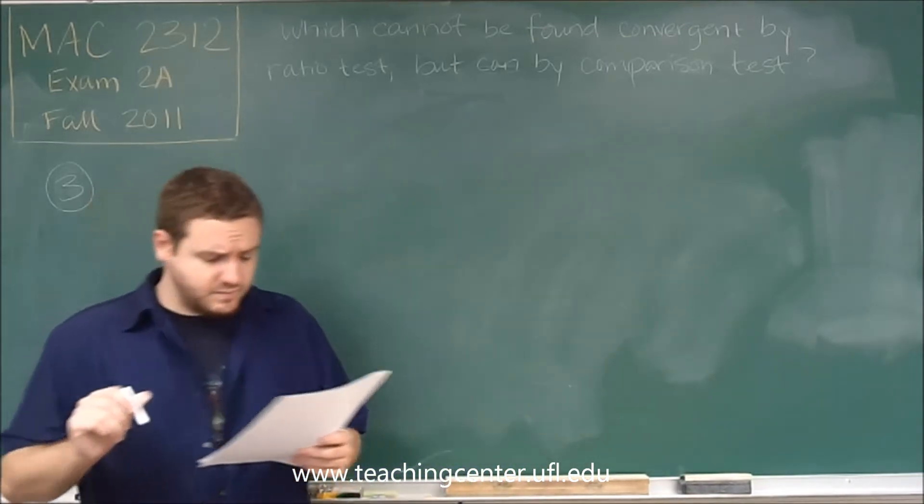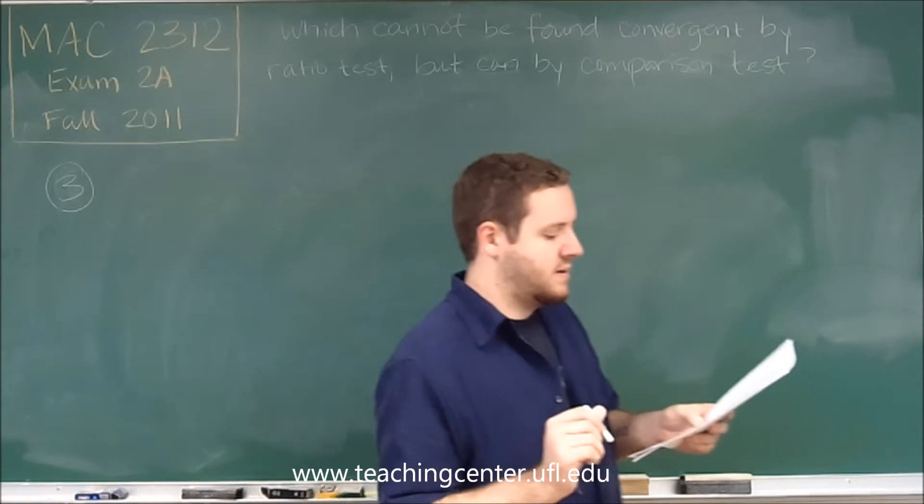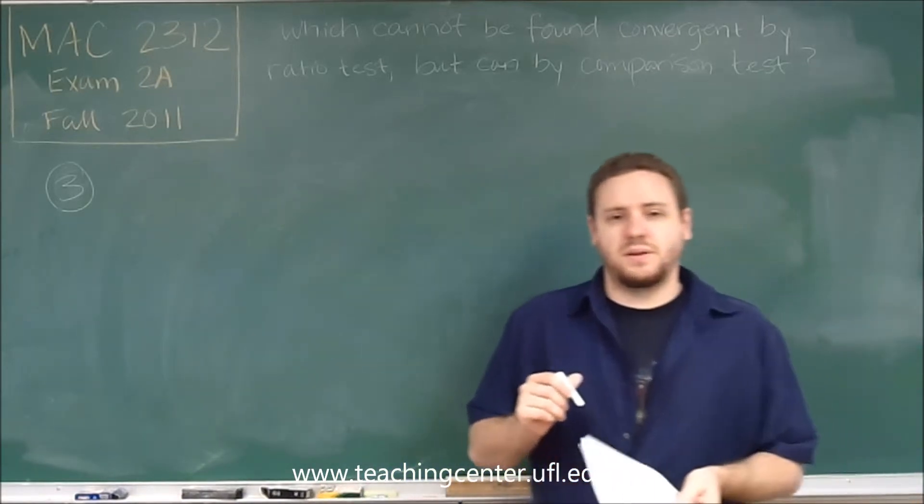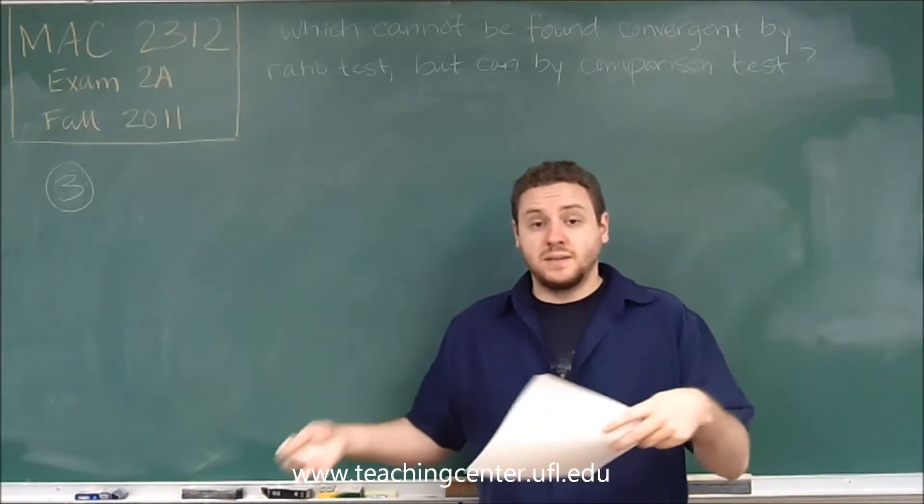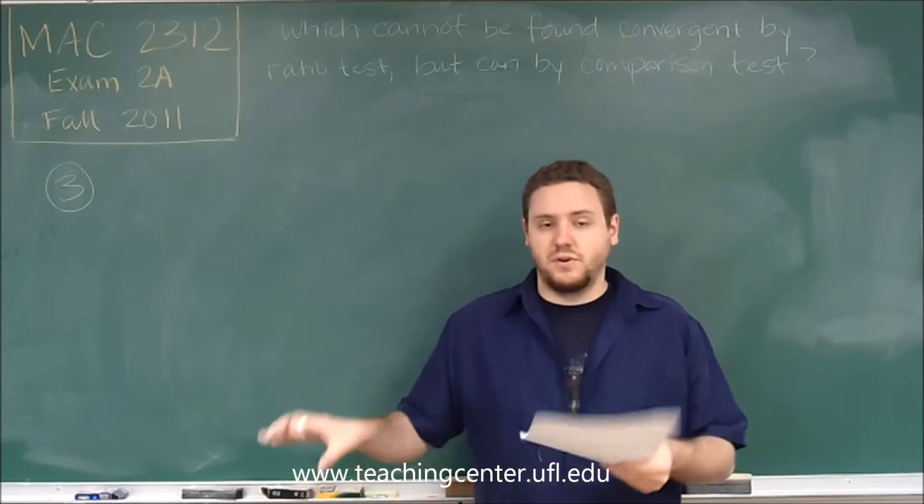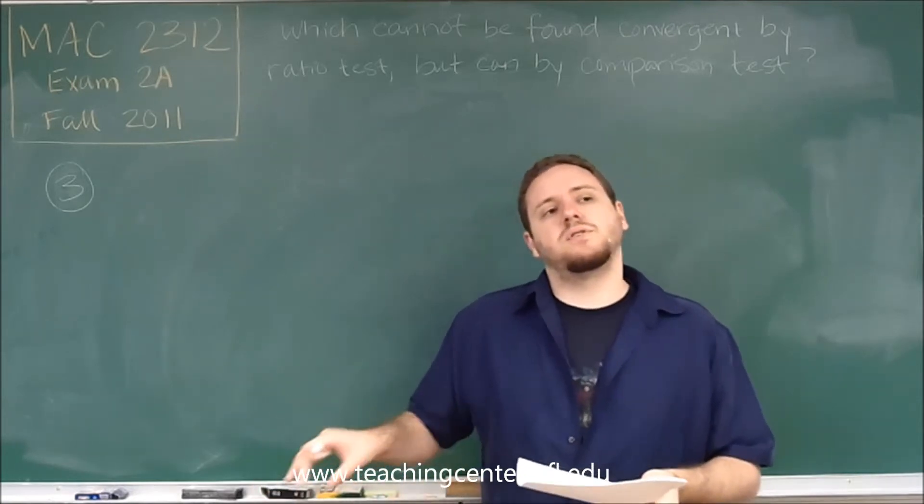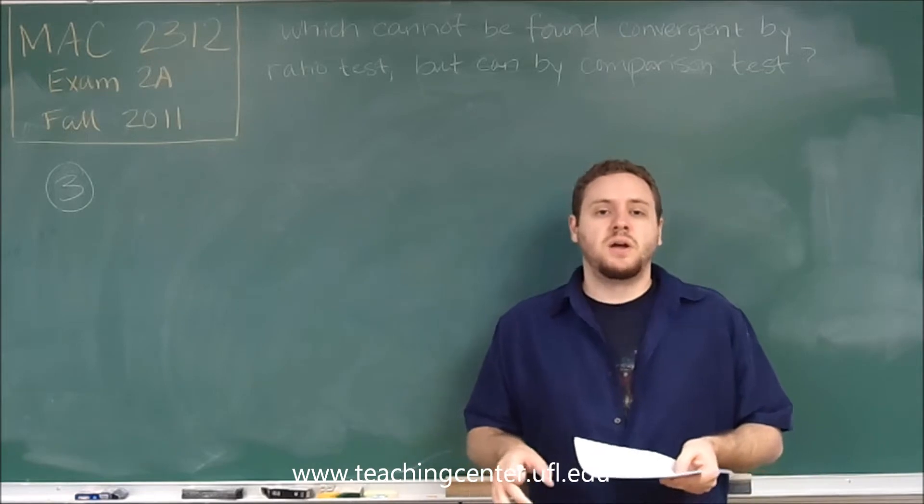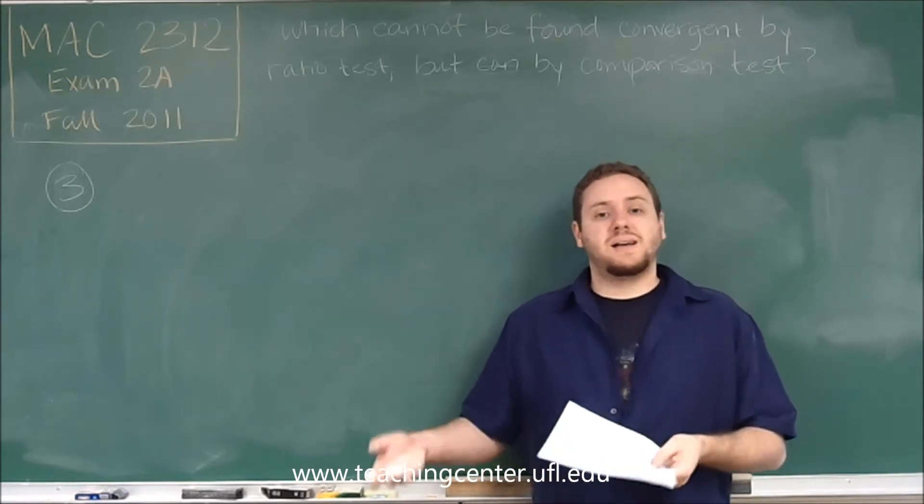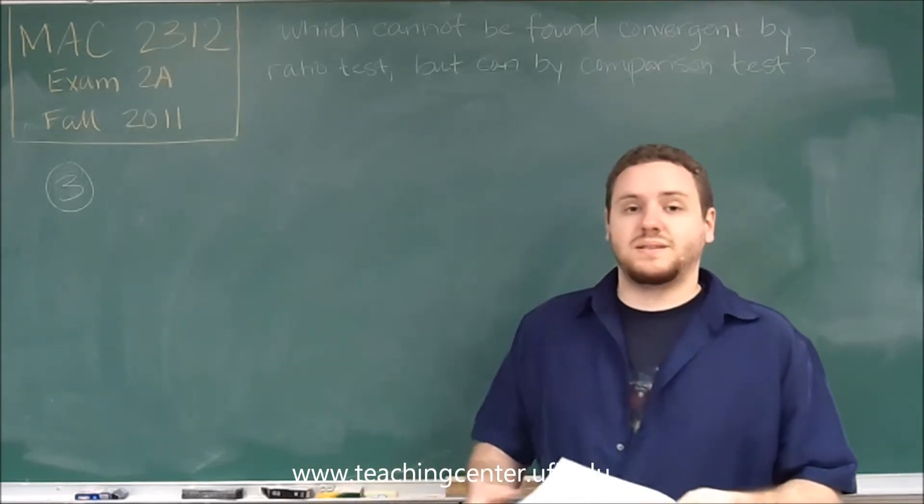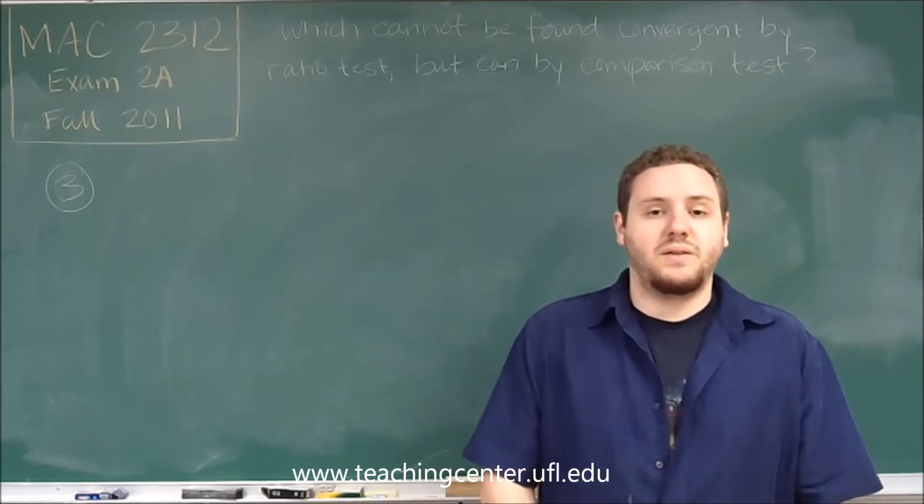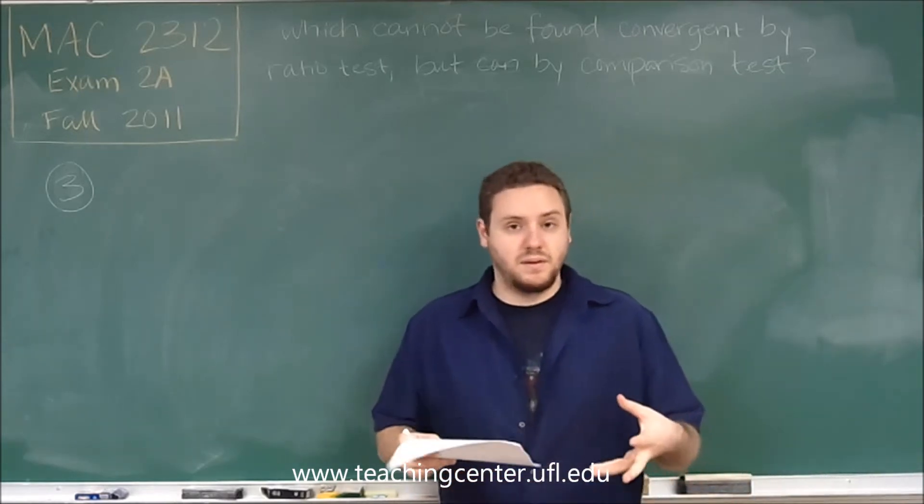But remember that if it can be found convergent by the comparison test, then it is convergent. So we definitely have a convergent series here, but we have a convergent series that the ratio test cannot prove. So what that means is that our ratio has to end up being one because that's the only way that we could have a ratio test not being conclusive.